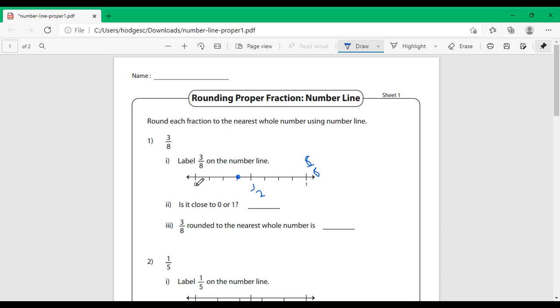So, it is closer to 0 than it is to 1. When asked if it is closer to 0 or 1, it is closer to 0. Estimating 3 eighths, we would estimate 0. 3 eighths rounded to the nearest whole number is 0.